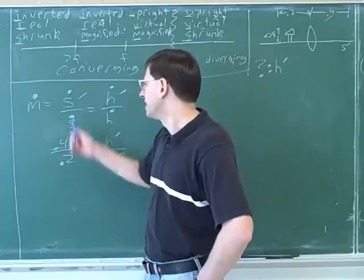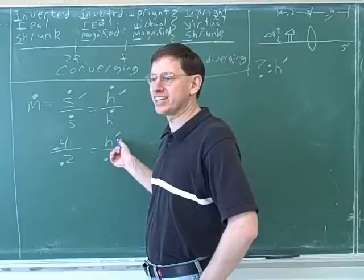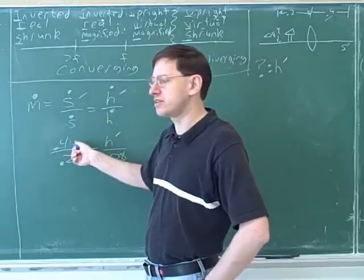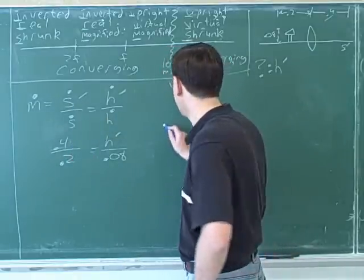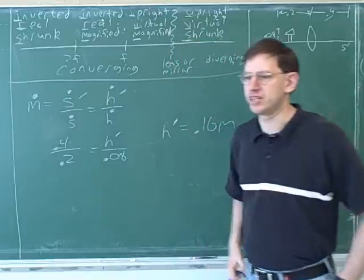Two times. Yeah, so the image is twice as far as the object, so it should have twice the height. Since the image is twice as far as the object, it should have twice the height. And that lets us go straight to the idea that the height is 0.16 meters.